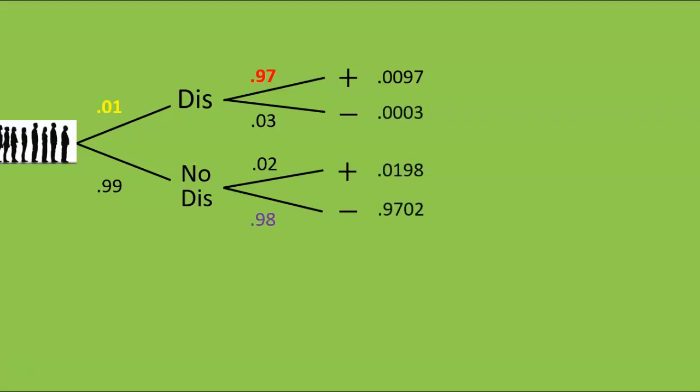These numbers give us the percentages of the population in our line that end up going along each path. To make this easier to grasp, it helps to think of a specific number of people in our vast line. I'll consider 10,000 people, since this will make the numbers that follow come out nice, as you'll see.